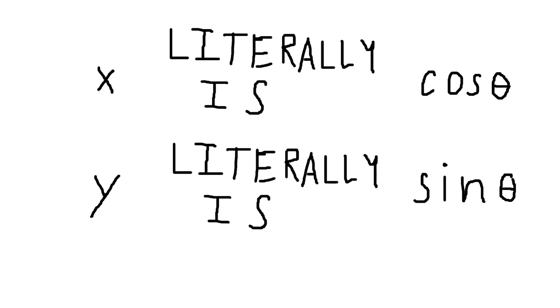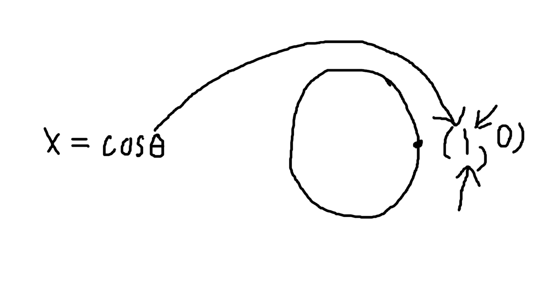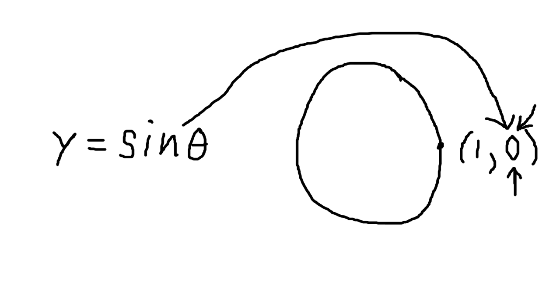So at the very beginning, when theta is 0, cosine of 0 is 1, because the point is 1 unit to the right. And sine of 0 is 0, because the point is 0 units up or down.